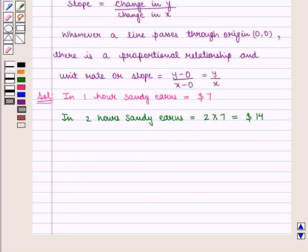Similarly, if we triple the number of hours, her earning will also get tripled. That is, in 3 hours, Sandy will earn 3 times 7, that is $21.